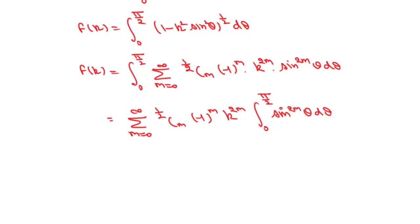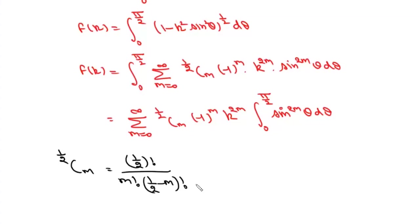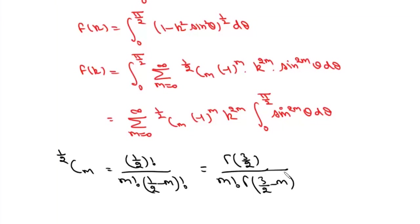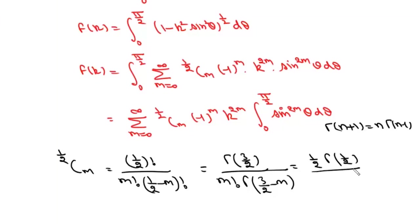Now we will write this expression in terms of the gamma function. First we simplify C(1/2, m), which is (1/2)! divided by m! times (1/2 − m)!, which equals Γ(3/2) divided by m! times Γ(3/2 − m). Using Γ(n+1) = n·Γ(n), this becomes 1/2 · Γ(1) divided by m! times Γ(3/2 − m), simplifying with factorial m and Γ(3/2 − m).